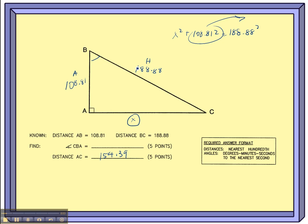So A and H is the cosine ratio. Cosine of angle B equals adjacent side, 108.81, over the hypotenuse 188.88. So that gives me the cosine of B, but I want B.